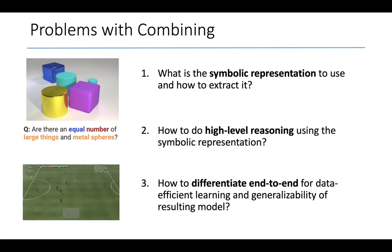And finally, we'd like to retain the benefits of deep learning, which are efficient stochastic gradient descent algorithms, which typically struggle with discrete symbols. So how can we extend these algorithms to make the resulting combined neurosymbolic program end-to-end differentiable?